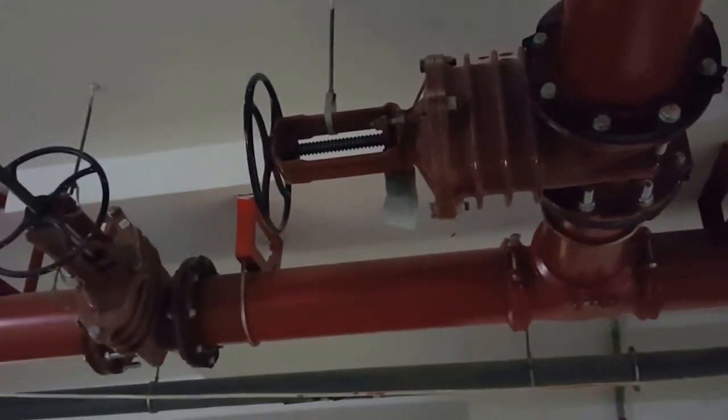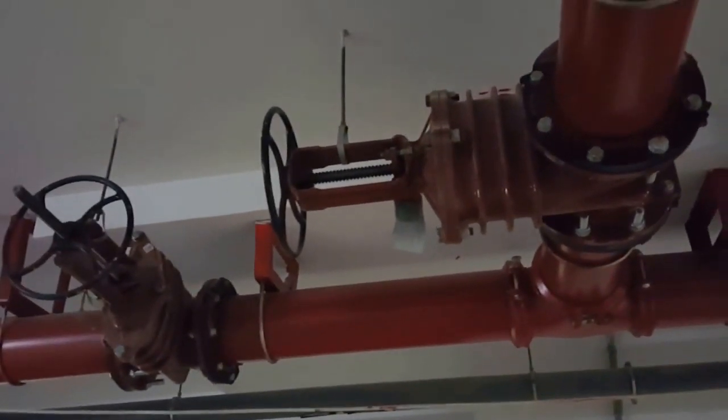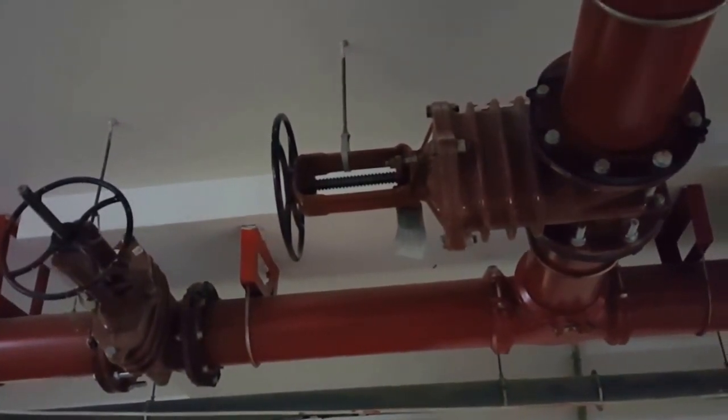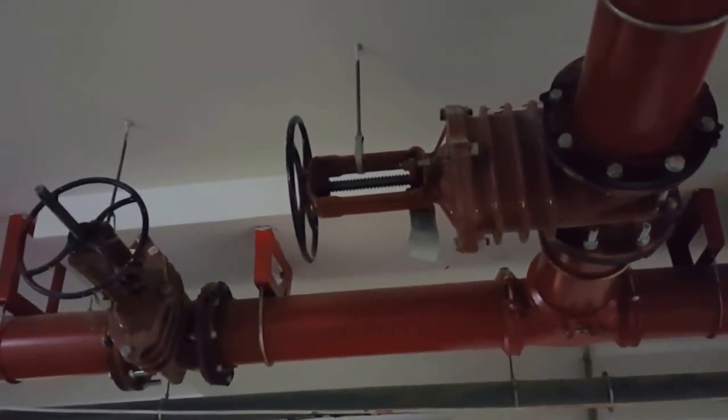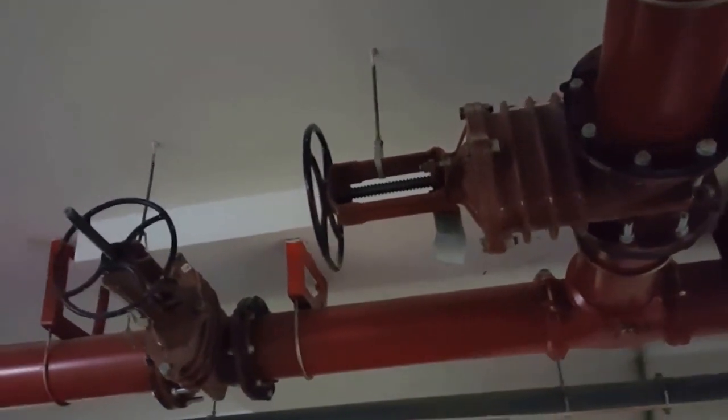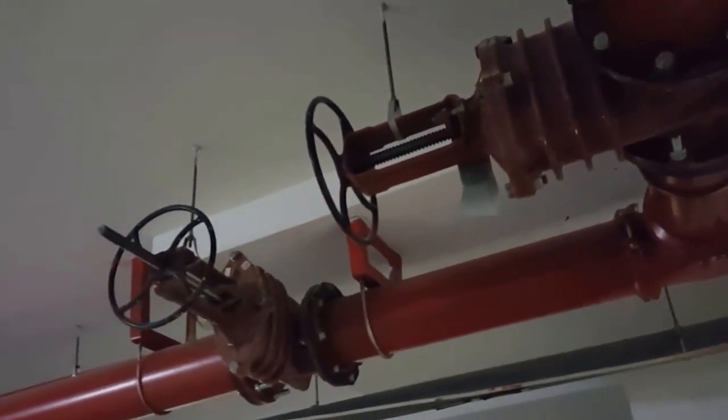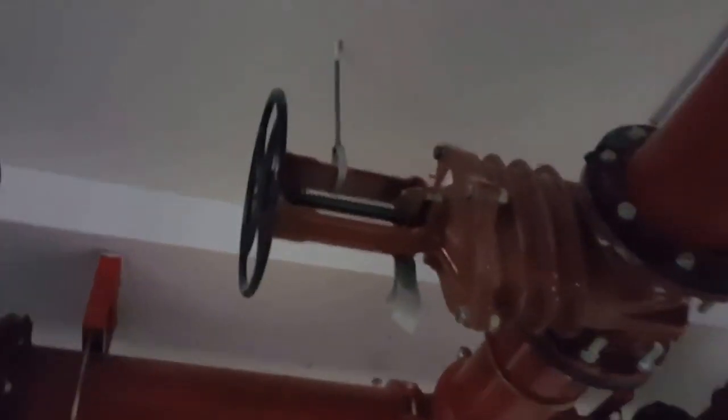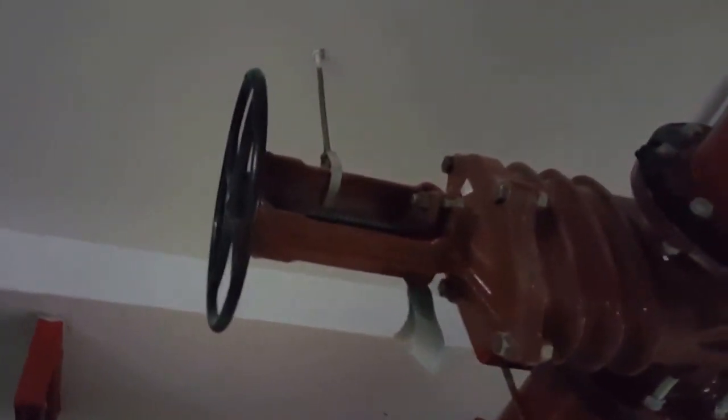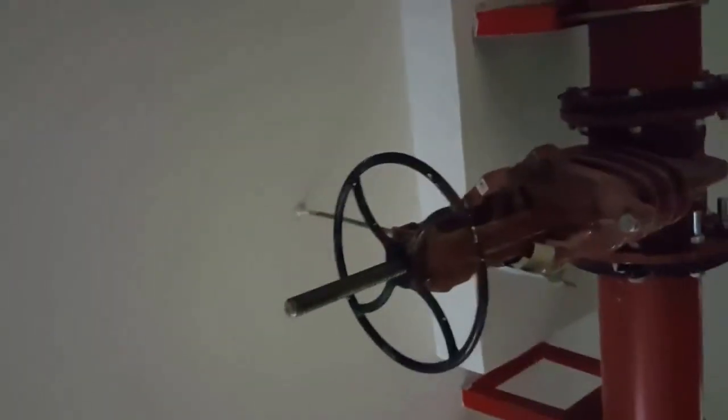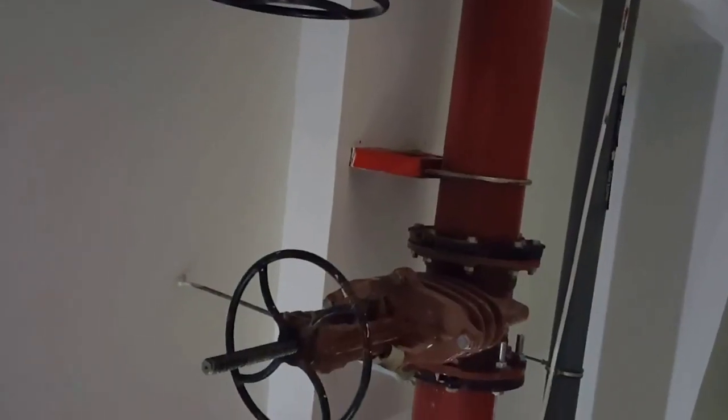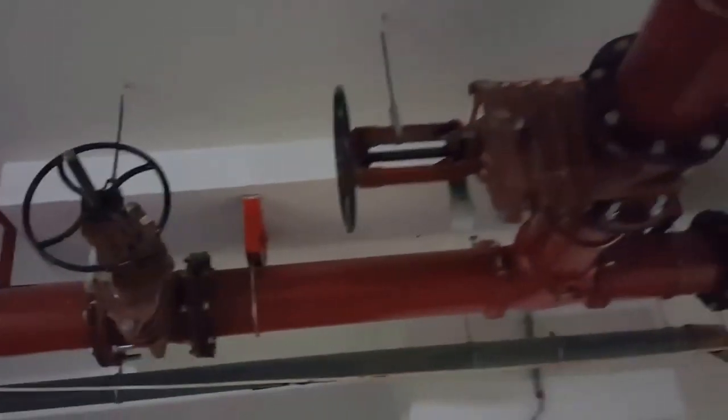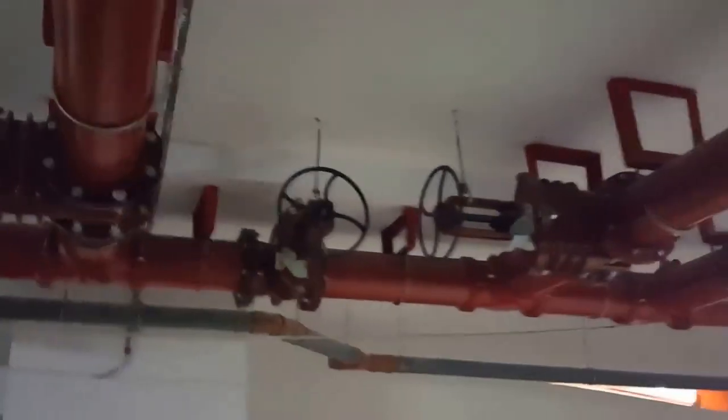This function only shows whether the OS&Y valve is open or not. If somebody wants to see if this gate valve is open or closed, they can see the rod. When the rod is coming outside it's open, when it's not coming here the valve is closed. We call this the OS&Y valve which is used in firefighting pipes.